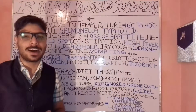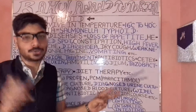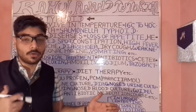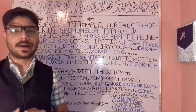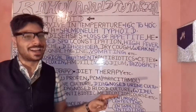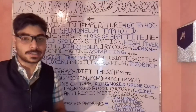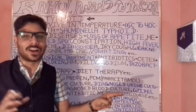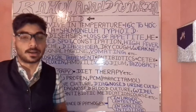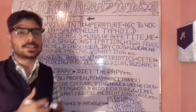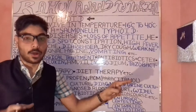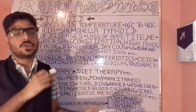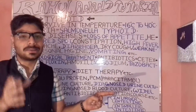Bacteria are classified into two broad categories: gram positive bacteria and gram negative bacteria. They are also divided into aerobic bacteria — those that grow and survive in the presence of oxygen — and anaerobic bacteria, which survive in the presence of carbon dioxide or in the absence of oxygen.